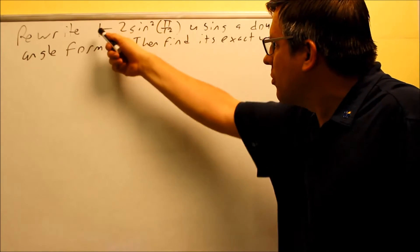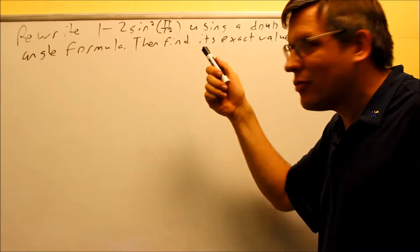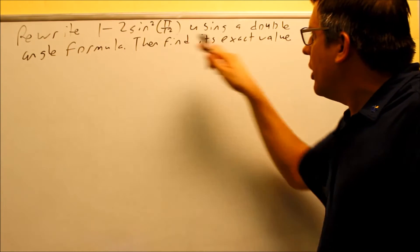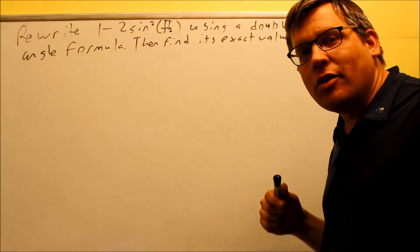We want to rewrite this expression, 1 minus 2 sine squared π over 12, using a double angle formula, and then we want to find its exact value.